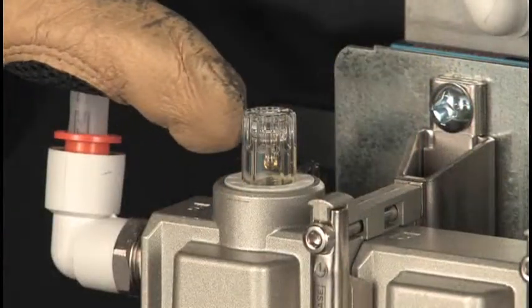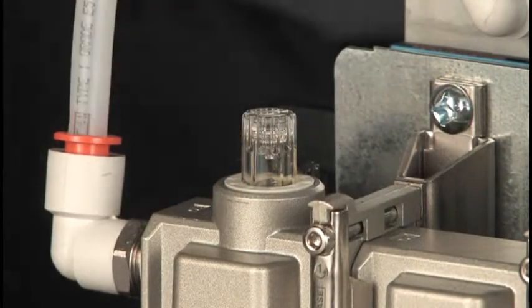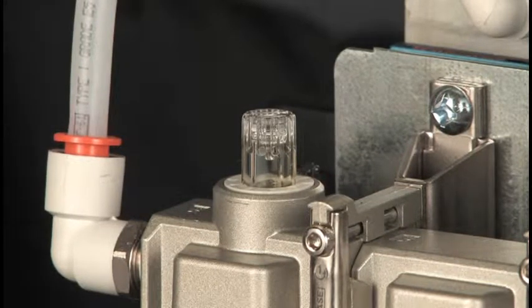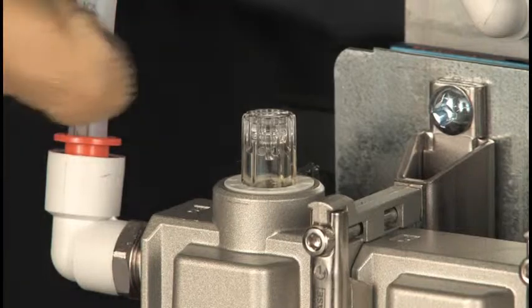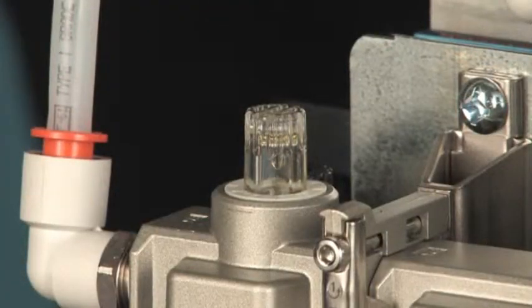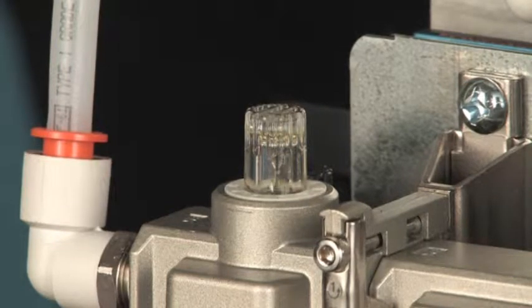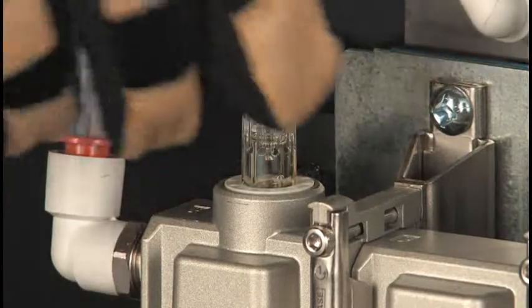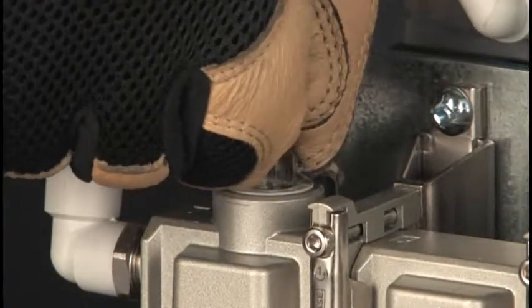Notice the small transparent knob on top. When and only when the pump is running, you will be able to see a drop of oil form and then fall into the air stream. By turning the knob in or out, you can regulate how much oil is introduced. Adjust the flow to produce one drop about every 30 seconds.